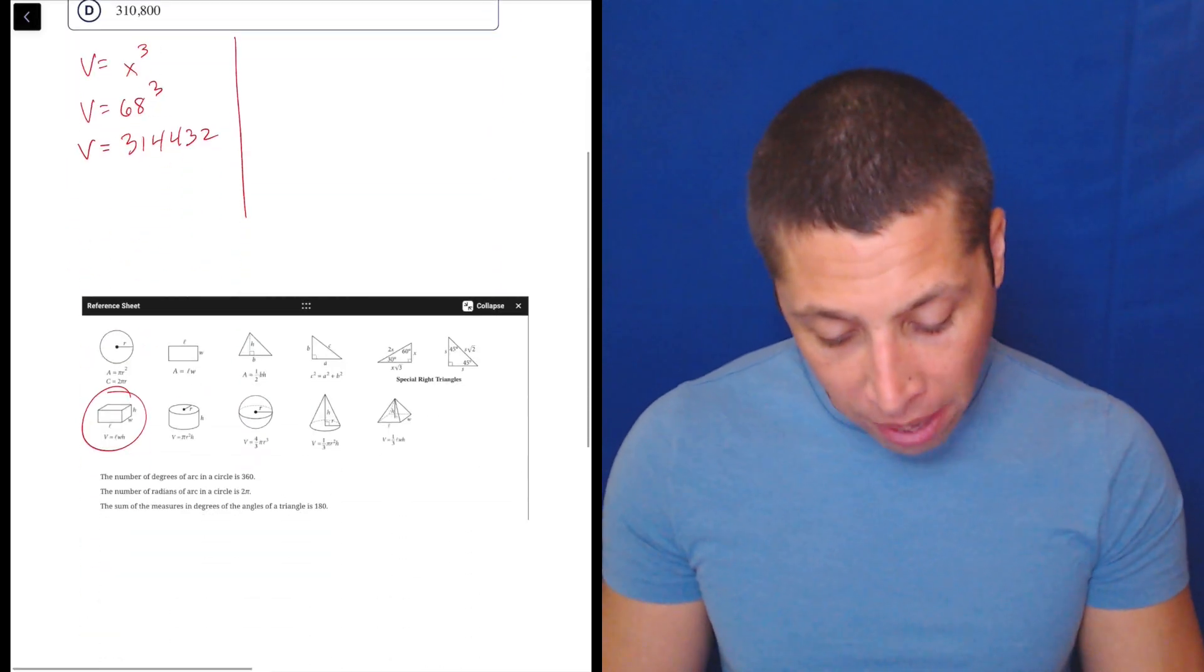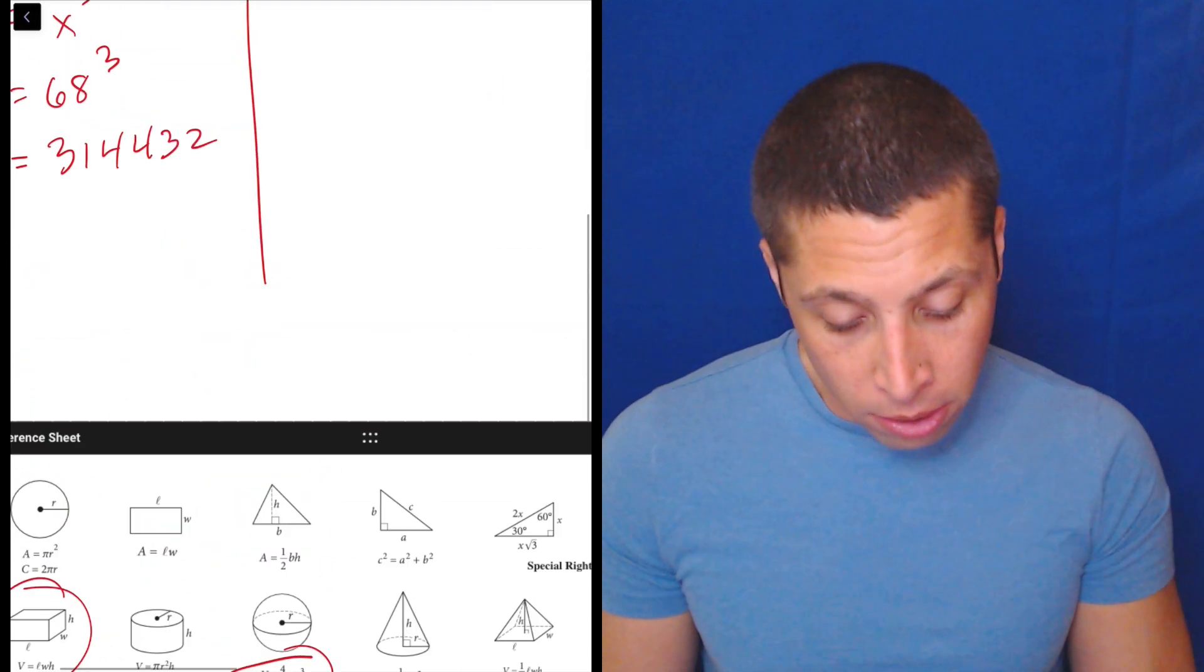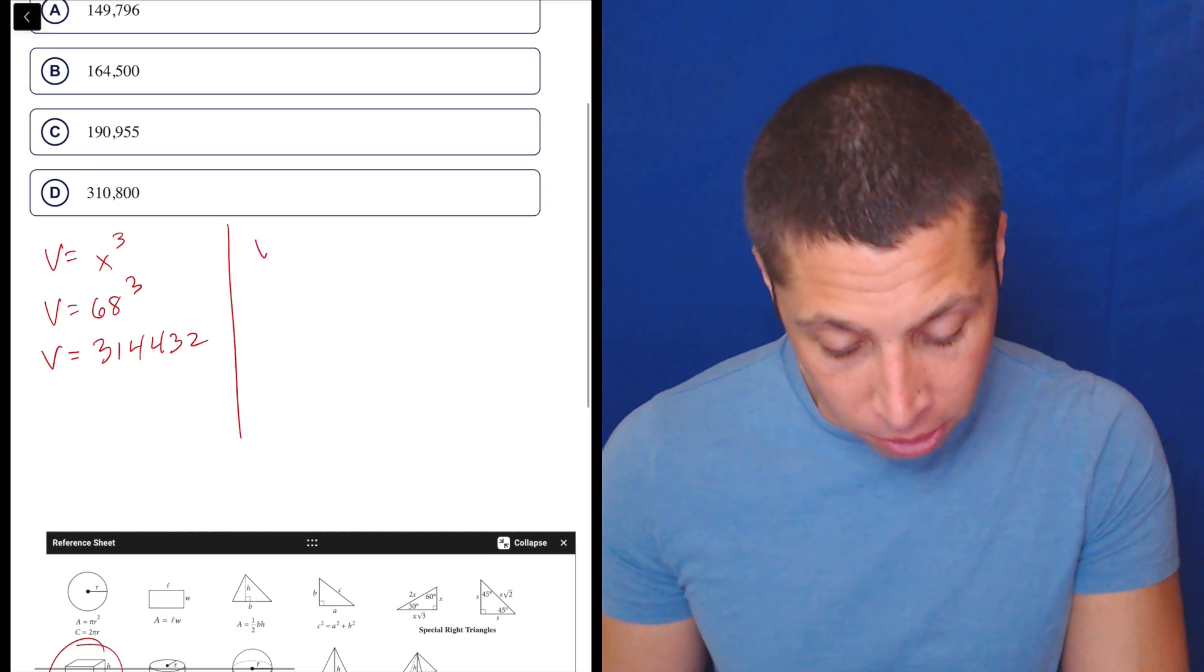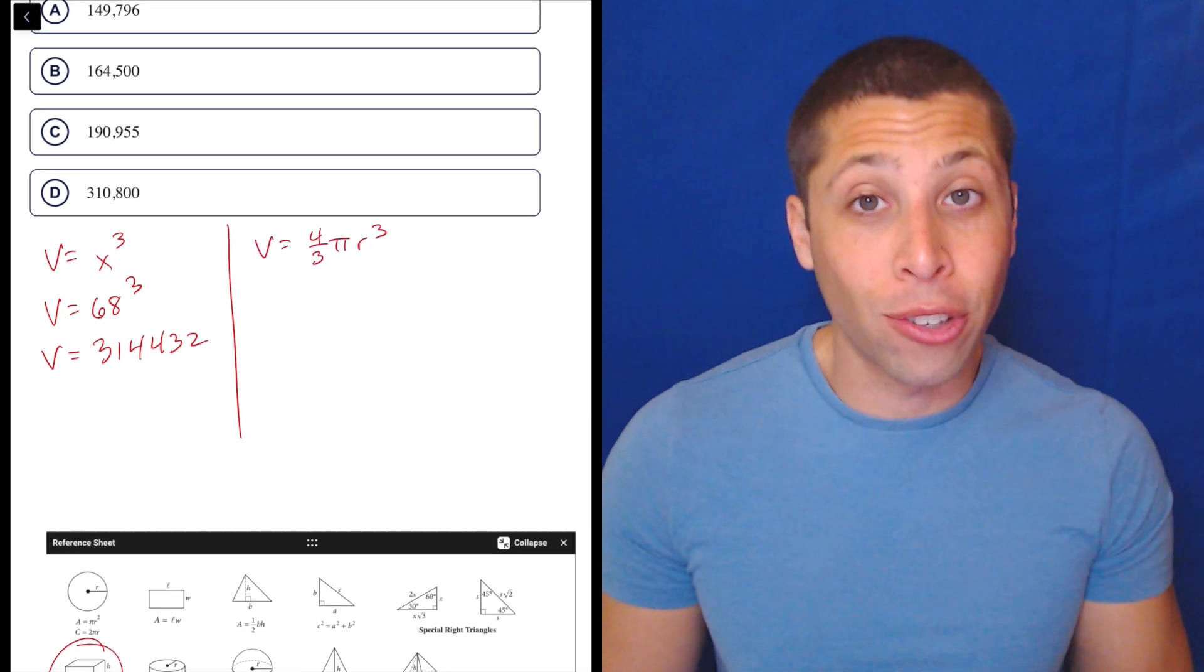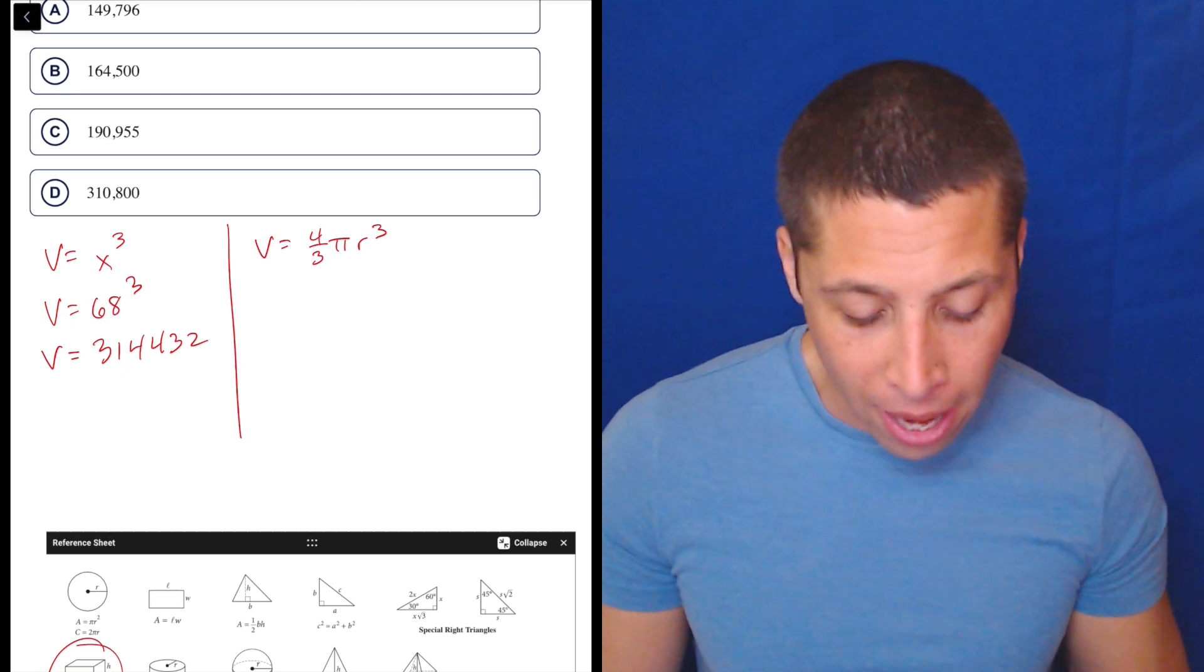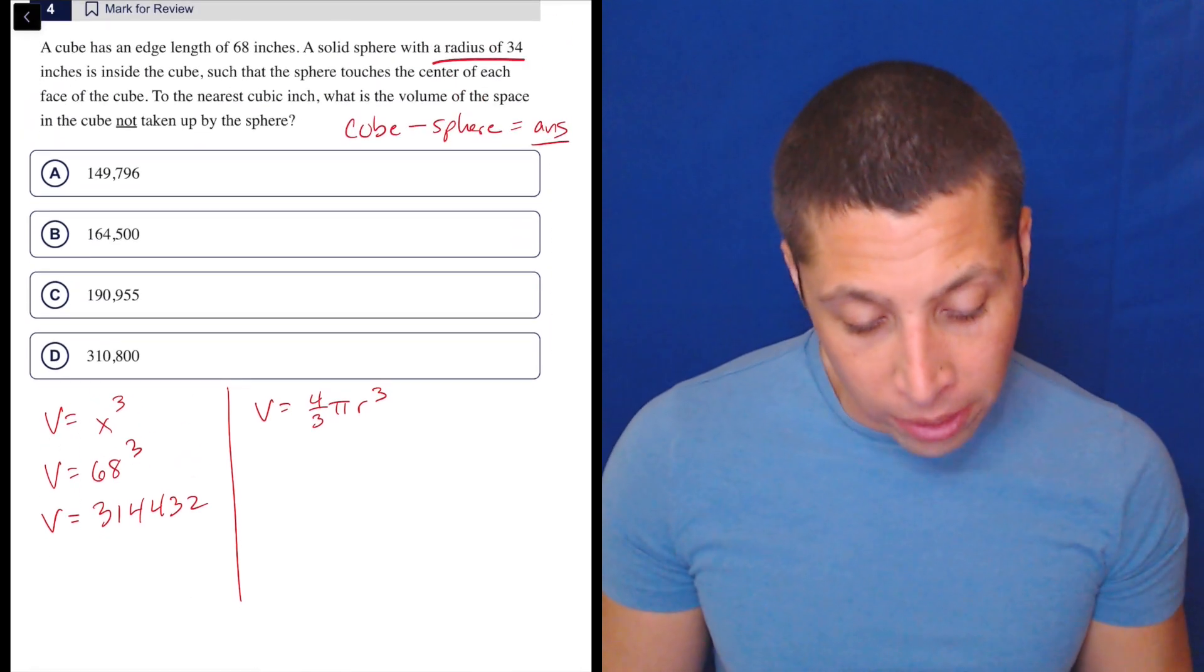Sphere, a little harder. I don't expect you to have that memorized. It's right there though. 4 thirds pi R cubed. So that goes right here. So volume is 4 thirds pi R cubed. I'd write it on your scratch as a blank formula to make sure you don't miswrite it. Then you can start plugging into it. So we know the sphere has a radius of 34.